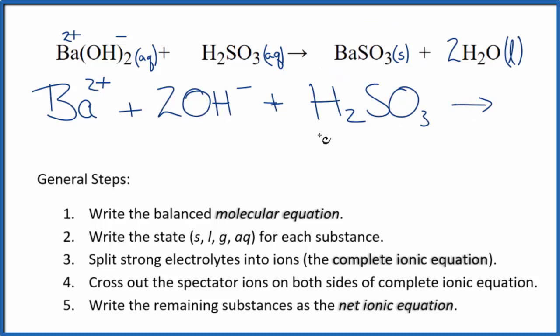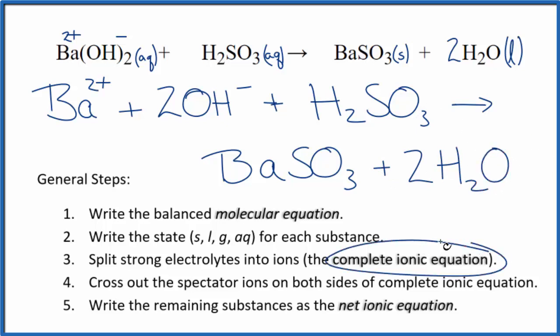We also don't split apart solids in a net ionic equation. So the precipitate here, we don't split that apart either. It's at the bottom of the test tube. So BaSO3. And we don't split liquids apart like water. So just 2H2O. So this is what we call the complete ionic equation.